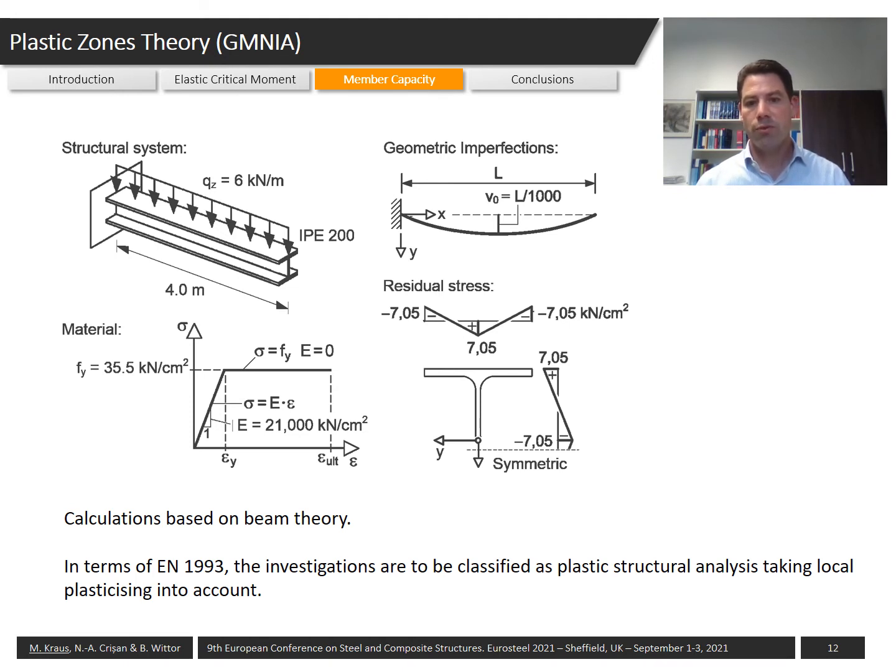You see the assumptions for the imperfections on this slide. We have geometric imperfections L/1000 as bow imperfection and common residual stresses assumed for corresponding rolled IPE profiles. With respect to the material, a bilinear material was assumed which is also common for rolled profiles.